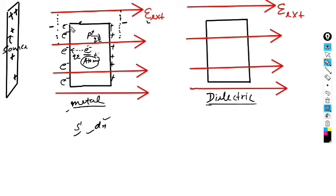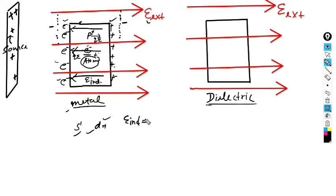Due to this separation of positive and negative charges, an induced electric field sets up opposing the external field — directed from positive to negative charges internally. In a metal, there are many electrons available, so the induced field keeps increasing until E_induced equals E_external. At that point, the net electric field inside the metal is zero.